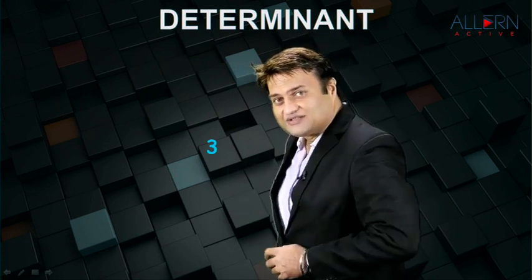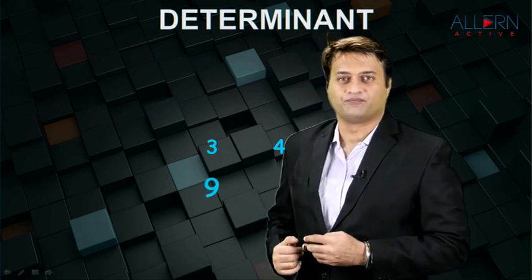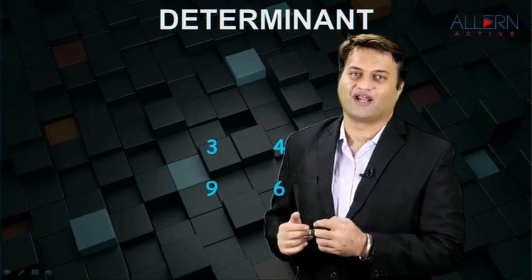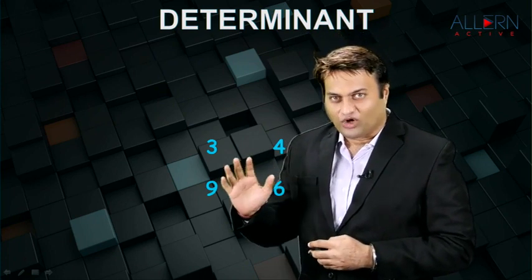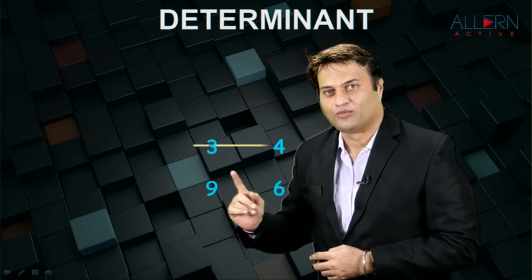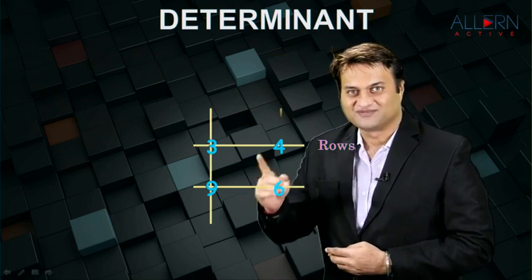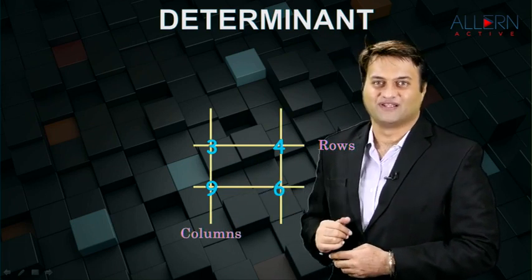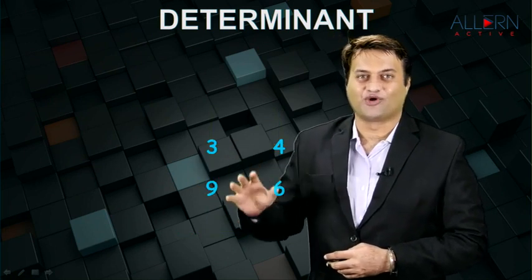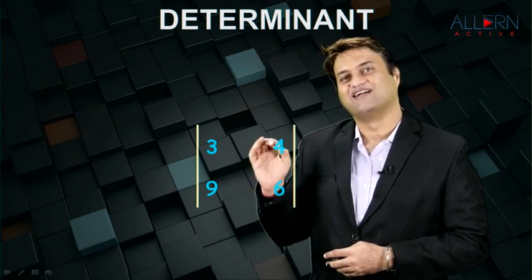Now you can all see a number on the screen, that is 3. You can see one more number that is 4, 9 and 6. So there are four numbers on the screen right now. Now if you actually observe these numbers, they are arranged in the form of rows — so there are two rows basically — and columns, so there are two columns basically. Now such an arrangement of numbers in rows and columns when written between two vertical lines is known as a determinant.